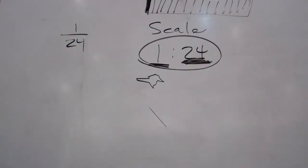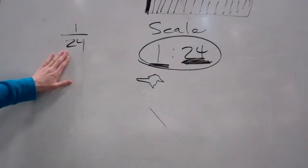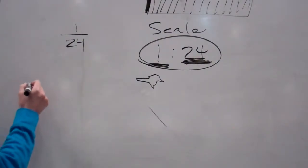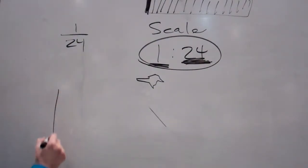Now, now that we've discovered that, I want you to listen to this. A model airplane is built with a scale 1 to 24. If the wingspan of the model airplane, what I want you to write down is you're going to do a chart.